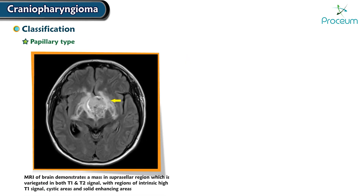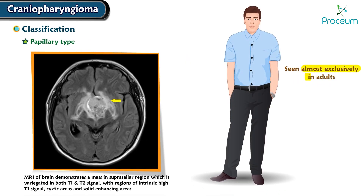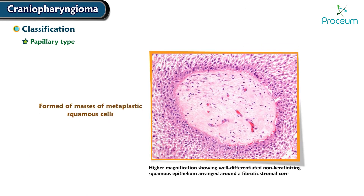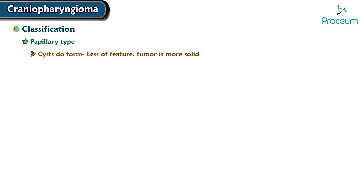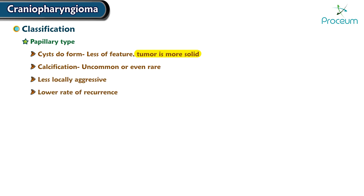The Papillary type is seen almost exclusively in adults. It is formed of masses of metaplastic squamous cells. Wet keratin nodules are absent. Cysts do form, but these are less of a feature and the tumor is more solid. Calcification is uncommon or even rare. They are less locally aggressive with a lower rate of recurrence. BRAF V600E mutations are observed in papillary craniopharyngiomas.